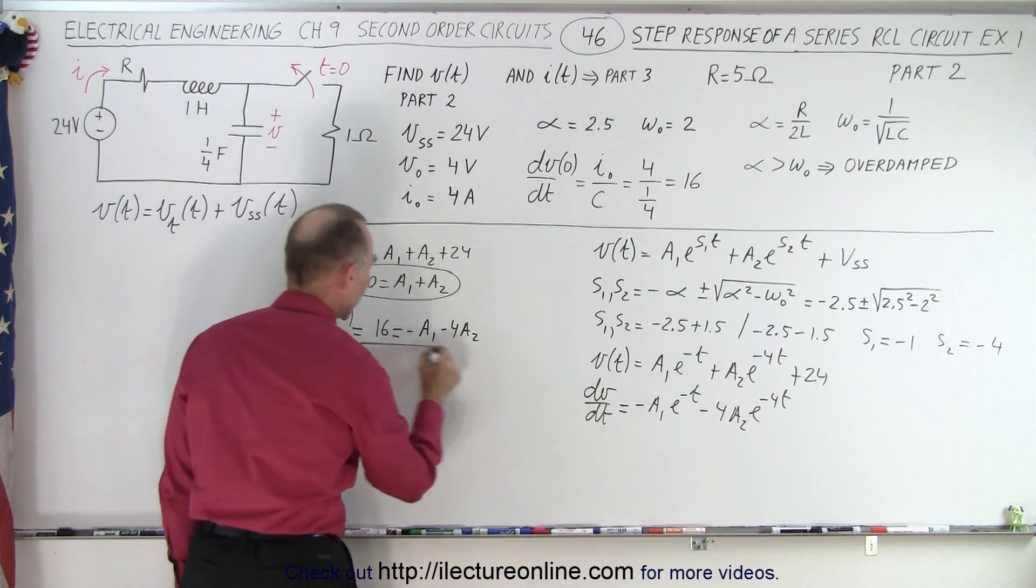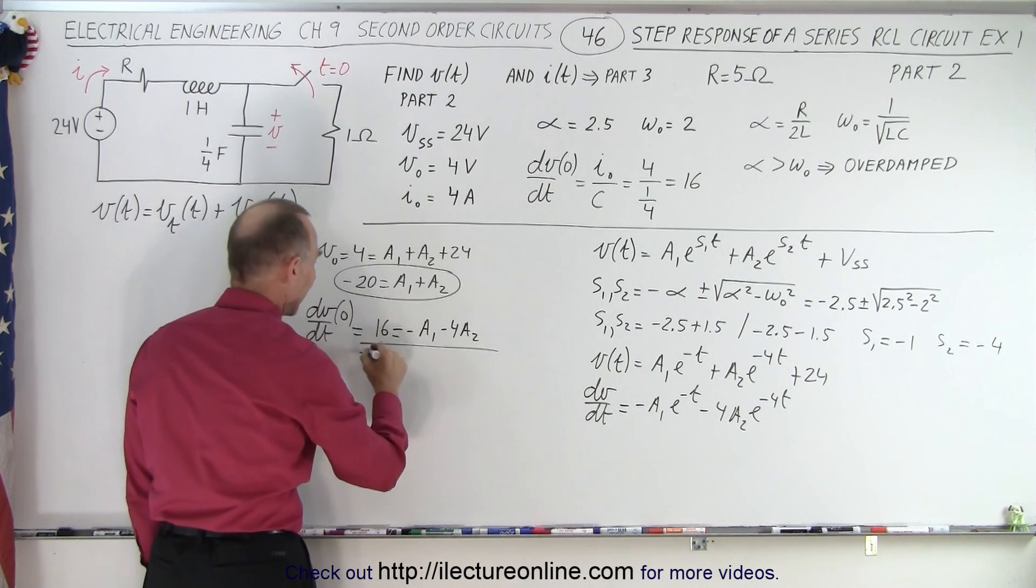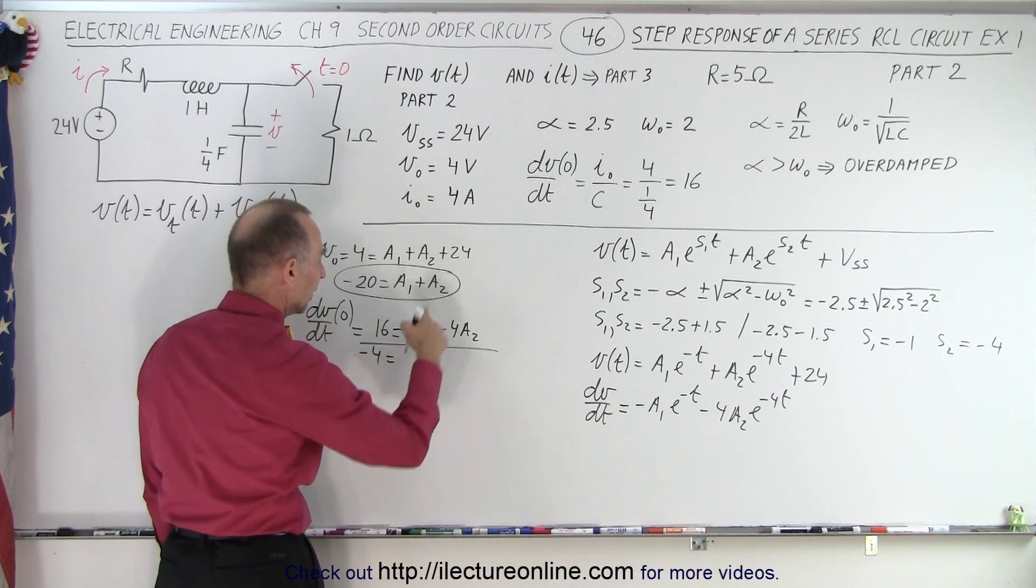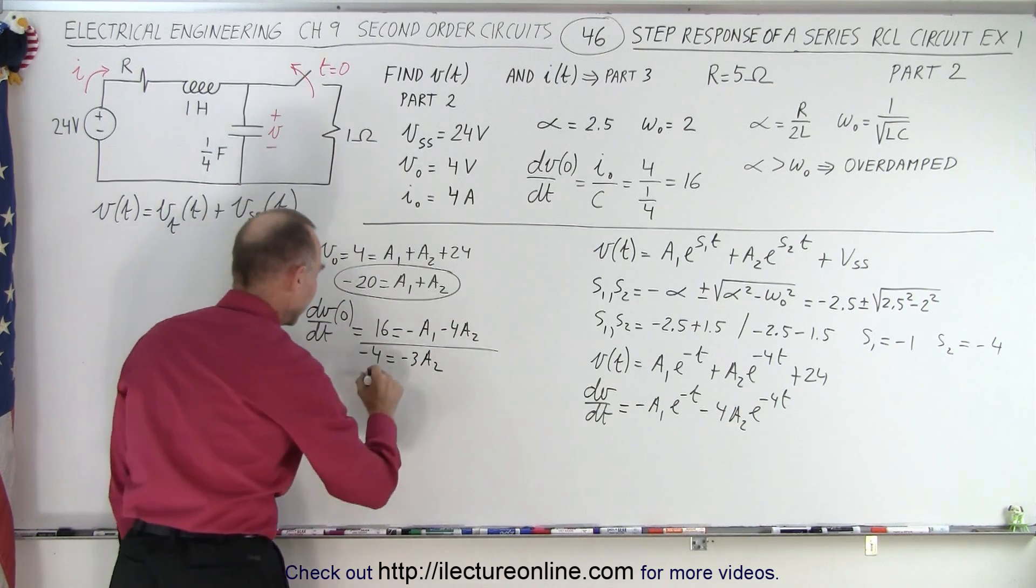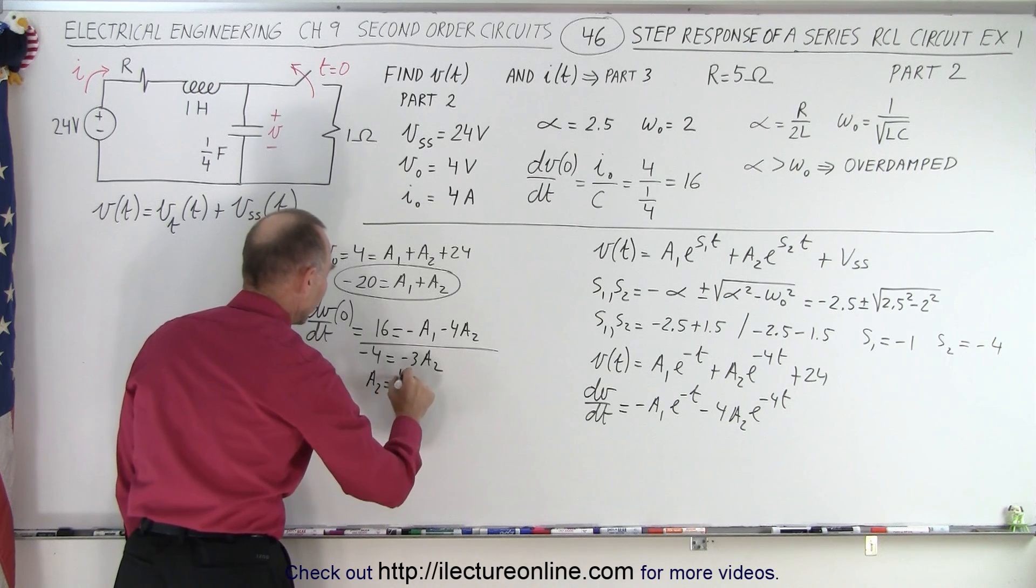If we now add the two equations together, we get minus 4 is equal to the A1 drops out, and we have minus 3A2, which means that A2 is equal to 4 thirds.